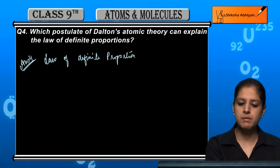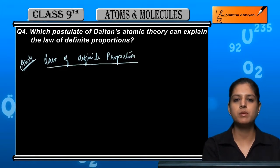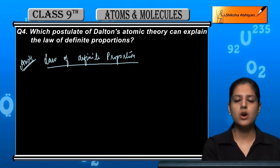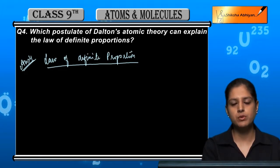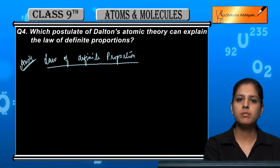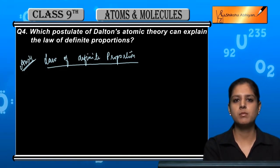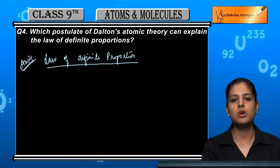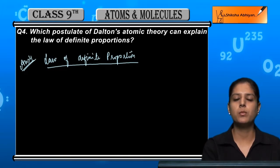तो उसके लिए पहले हमें पता होना चाहिए कि law of definite proportion क्या होता है. So according to law of definite proportion, fixed number of molecules या fixed number of the atoms of any element they combine to form a compound.